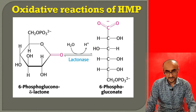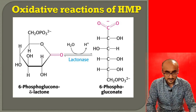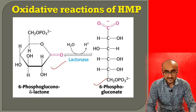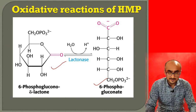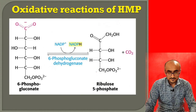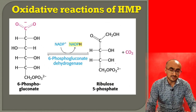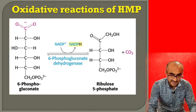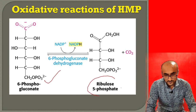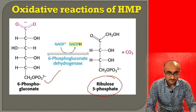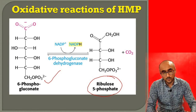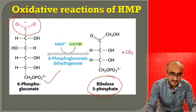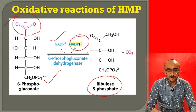The second reaction of the oxidative phase is the hydrolysis of 6-phosphogluconolactone to 6-phosphogluconate, catalyzed by lactonase, utilizing one water molecule. The third reaction is again a dehydrogenation reaction catalyzed by 6-phosphogluconate dehydrogenase, where 6-phosphogluconate is converted into ribulose-5-phosphate, a pentose sugar. The first carbon of glucose is removed as carbon dioxide, and simultaneously another molecule of NADP+ is reduced to NADPH.